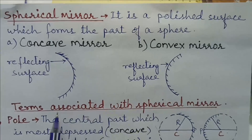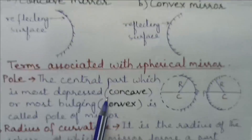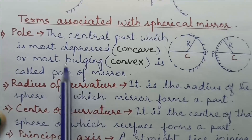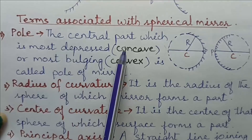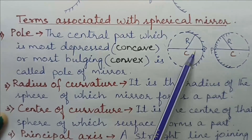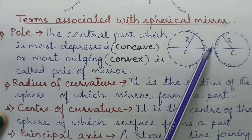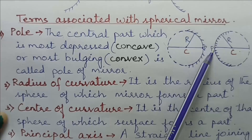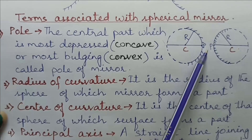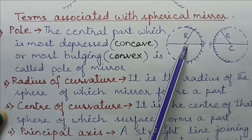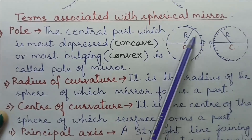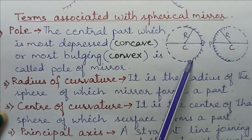There are few terms associated with spherical mirror. Pole — the central part which is most depressed in case of concave mirror or most bulging in case of convex mirror is called the pole of the mirror. Radius of curvature — it is the radius of the sphere of which the mirror forms a part.